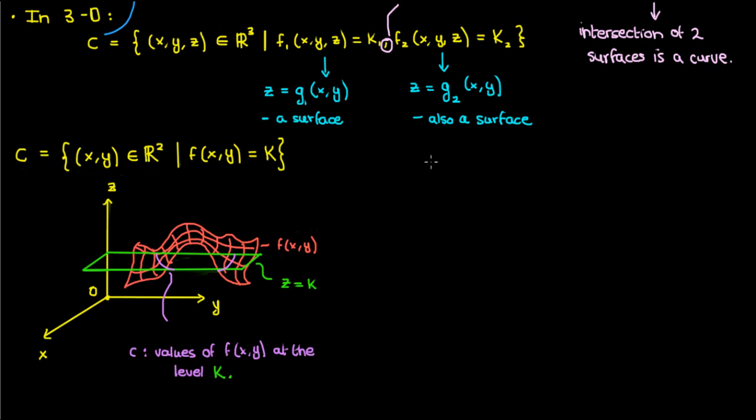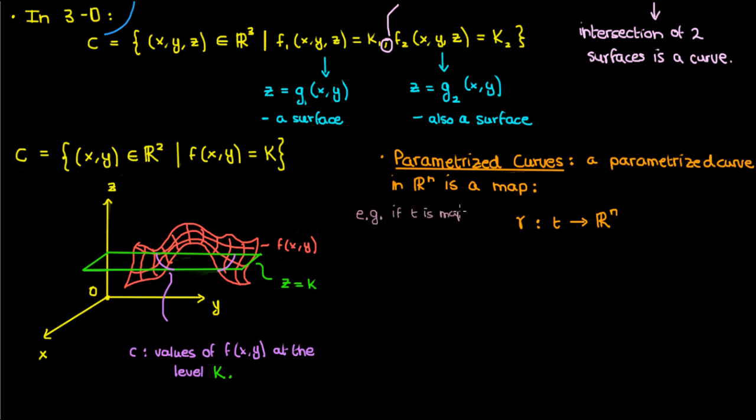In differential geometry we tend not to use level curves as much, we tend to use something called parametrized curves. So let's define parametrized curves. A parametrized curve is a map gamma and what that map does is it takes a real parameter t and maps it to some ordered n-tuple of real numbers. For instance if I take a real number t and map it to a triple of real numbers x, y, and z then I'll get a curve in three dimensions.